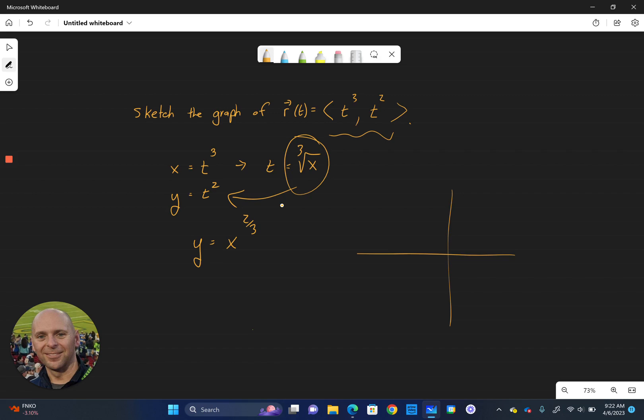We would just go ahead and make a quick graph here. So eliminating the parameter works particularly well when we're dealing with something that just exists in two dimensions. It can also help us in three dimensions sometimes. It just depends on what the function is that we're presented with.